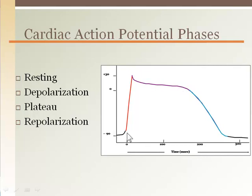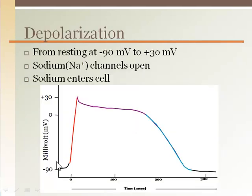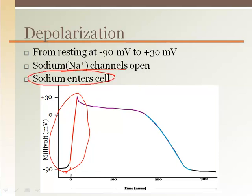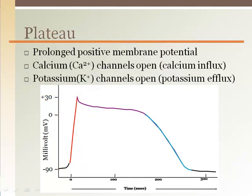A whole neuron action potential lasts for less than 5 milliseconds before repolarizing again. As with a neuron, the depolarization is due to an opening of sodium voltage-gated channels, which allows sodium to rapidly enter the cell, making the cardiac cell more and more positive. Sodium channels close completely and are locked in a refractory position once the membrane reaches plus 30 millivolts.